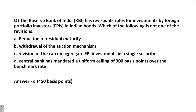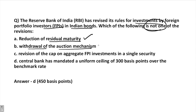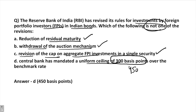Another question: The RBI has revised its rules for investments by foreign portfolio investors in Indian bonds. Which of the following is not one of the revisions? Reduction of residual maturity — yes, that has been done. Withdrawal of auction mechanism — yes, that has been withdrawn. The cap on aggregate FPI investments in a single security — that has also been revised. The central bank has mandated a uniform ceiling of 300 basis points — this is incorrect, because the uniform ceiling is 450 basis points over the benchmark rate, not 300.